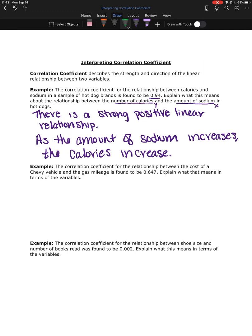So there's one example. So now, second example, we have a relationship between the cost of a Chevy vehicle and the gas mileage, and that relationship was found to be 0.647. So explain what this means in terms of the variables.